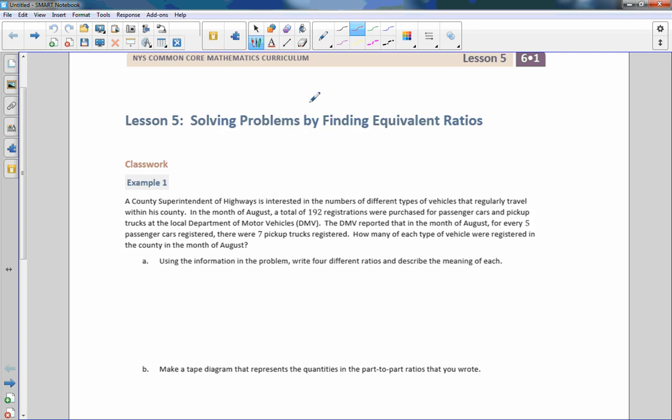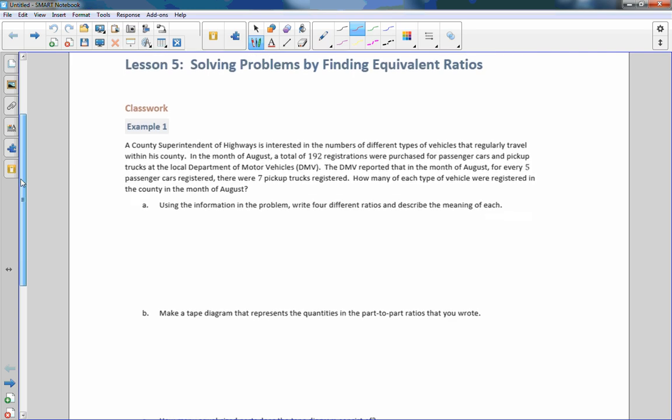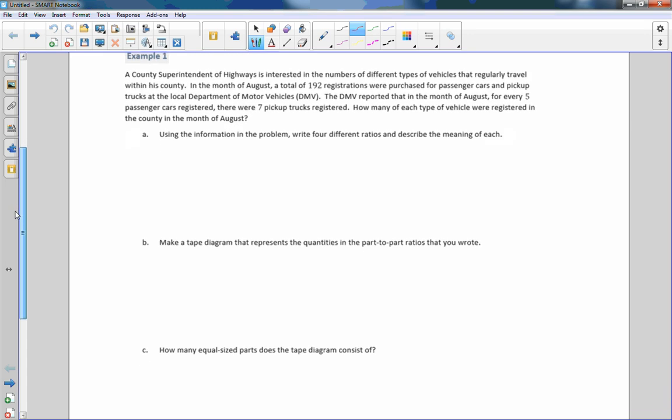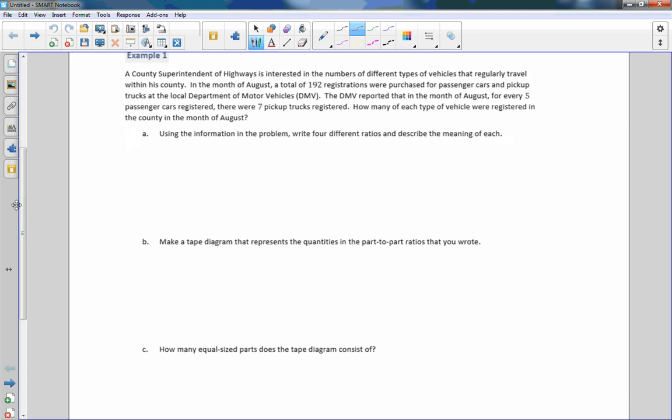So we have example one here. A county superintendent of highways is interested in the numbers of different types of vehicles that regularly travel within his county. In the month of August, a total of 192 registrations were purchased for passenger cars and pickup trucks at the local DMV, Department of Motor Vehicles. The DMV reported that in the month of August, for every five passenger cars registered, there were seven pickup trucks. So the ratio is five to seven. How many of each type of vehicle were registered in the county in the month of August?